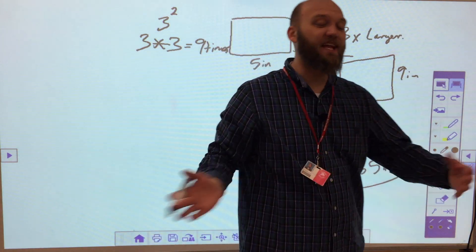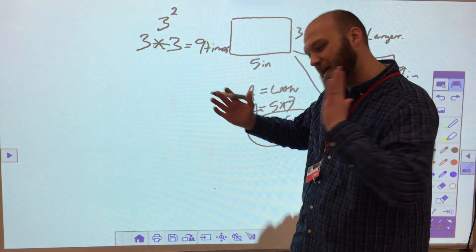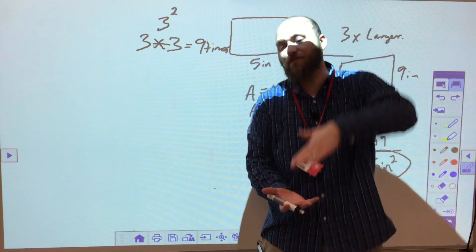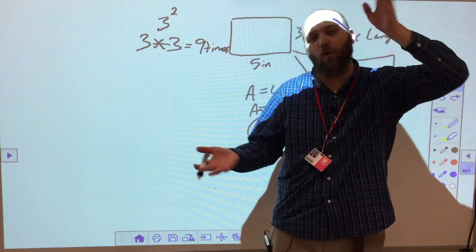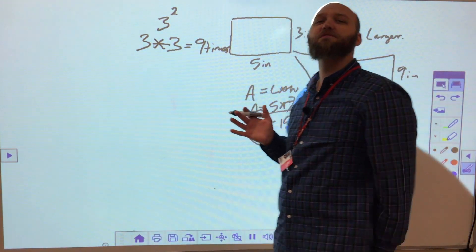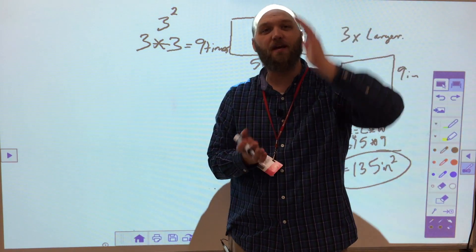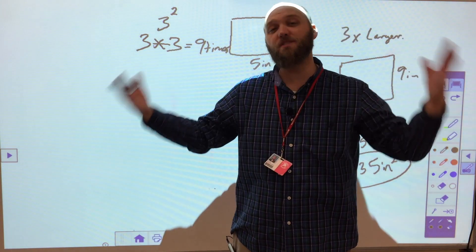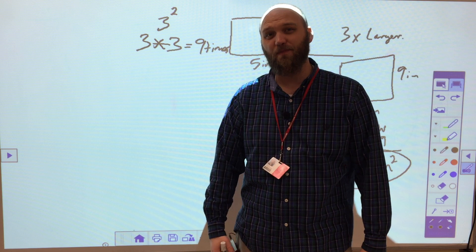So you might go, oh, well, it's 15, now it's 45. But it's not because I'm making it three times this way and three times this way. That means the whole thing is going to be nine times the surface area. So if it were two times bigger and two times higher, two times two, it'd be four times the surface area.